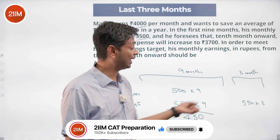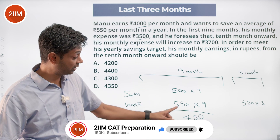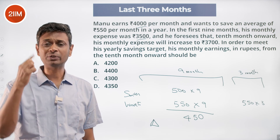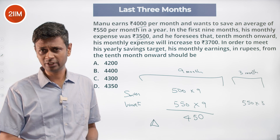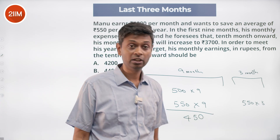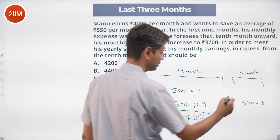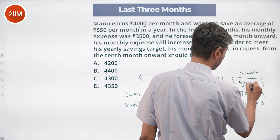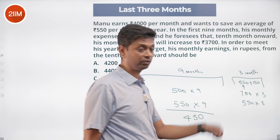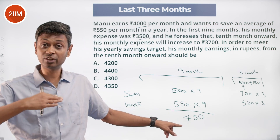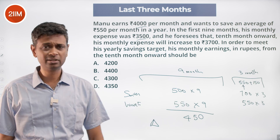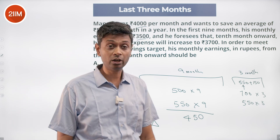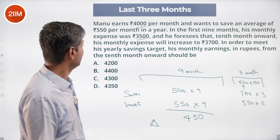He wants to make this up: 50 into nine is 450 — this is the delta. He has three months to make it up, so each month he can make up 150. In terms of averages: 150, 150, 150. He anyway wants to save 550, so he needs to make 150 more than that, meaning he has to save 700 per month. That 700 is 550 plus 150, where the 150 comes from spreading the 450 deficit across the last three months.